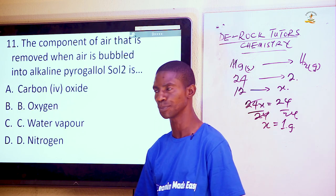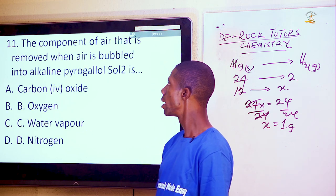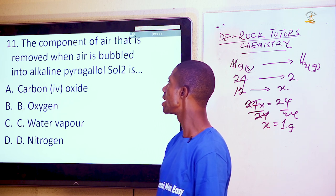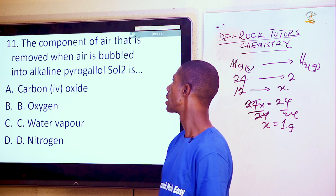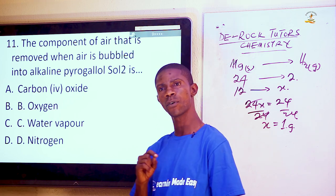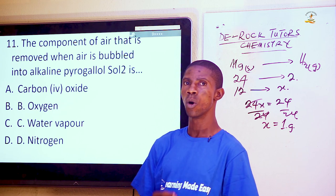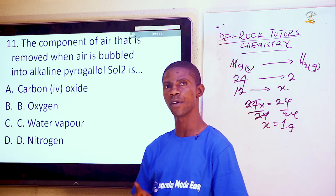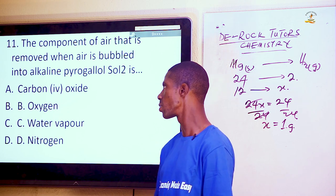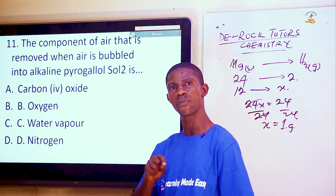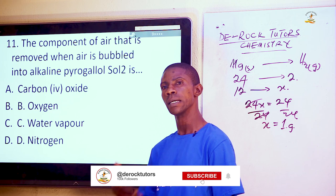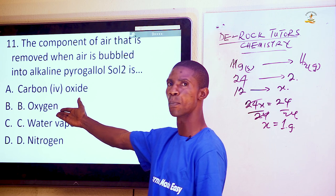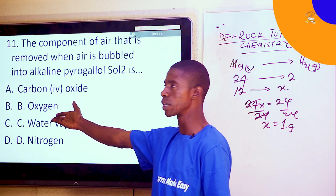Question 11: The component of air that is removed when air is bubbled into alkaline pyrogallol. Air is a mixture containing oxygen, carbon dioxide, nitrogen, water vapor, and solid particles. Passing air through alkaline pyrogallol removes oxygen. The answer is oxygen, option B.